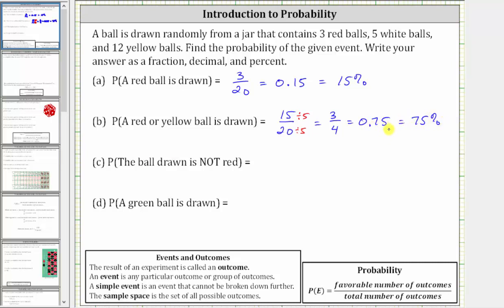For part C, we want to find the probability the ball is not red. The balls that are not red are the white balls and yellow balls. Because there are five white balls and 12 yellow balls, and five plus 12 is 17, there are 17 favorable outcomes out of a total of 20 outcomes, giving us a probability of 17 divided by 20, or 17-twentieths, which does not simplify.